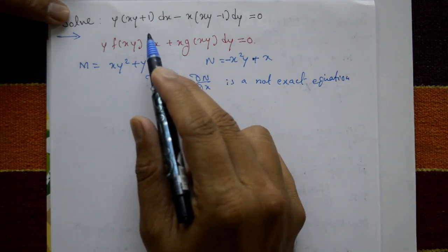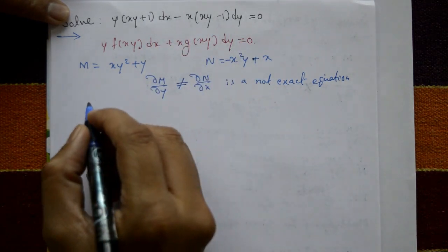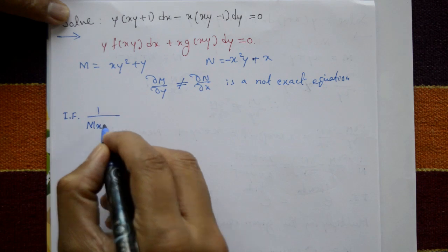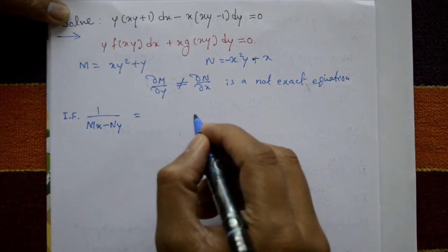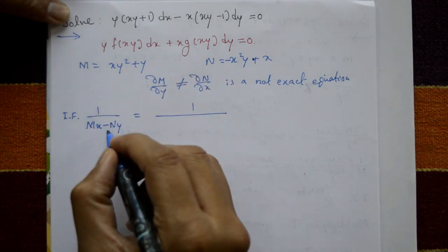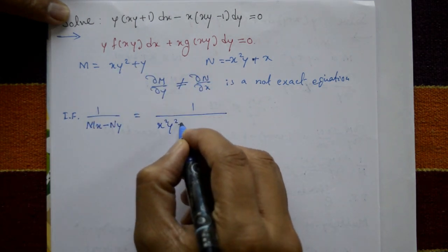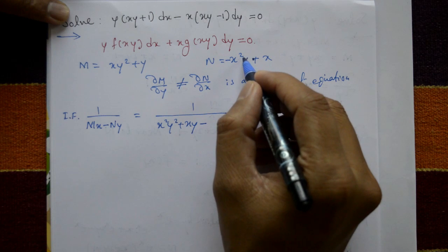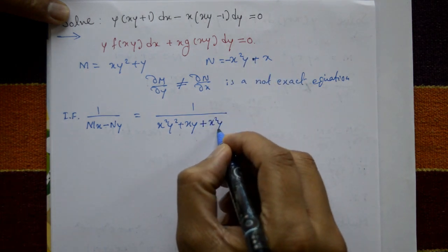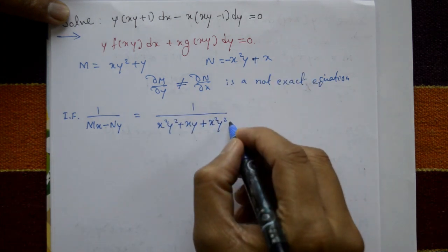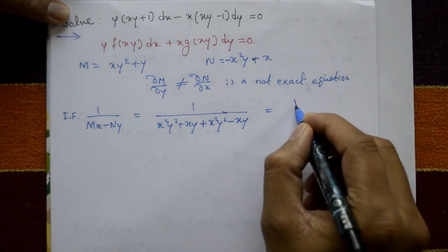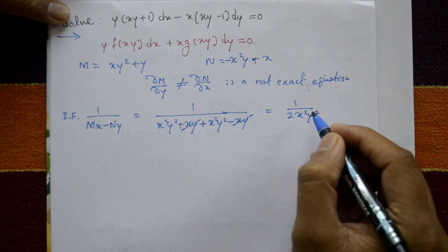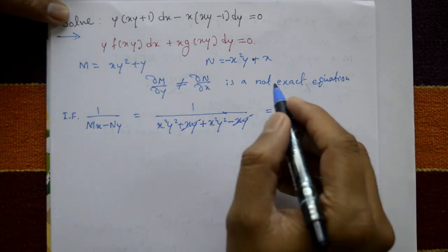Now find the integrating factor. In this method, the integrating factor is 1 upon (M·x minus N·y). This equals 1 upon M multiplied by x: x²y² plus x·y, minus (multiplied by y): plus x²y² minus x·y. This equals 1 upon 2x²y². This is the integrating factor.